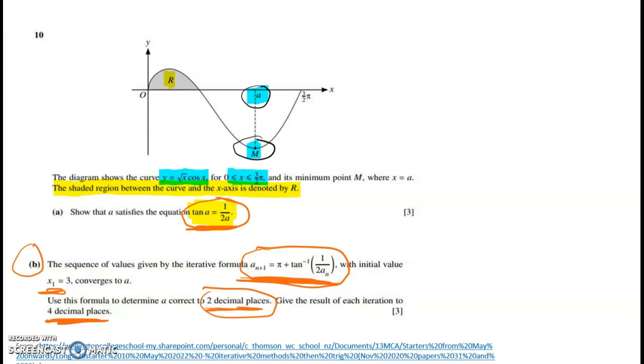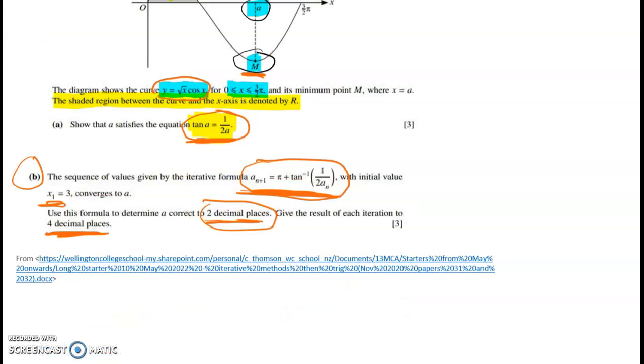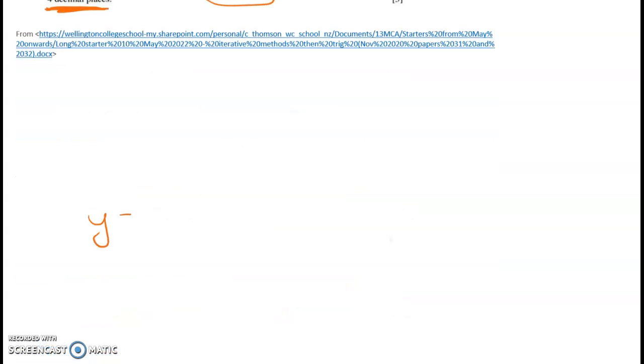So let's start the first bit. We're going to look at my function and we'll start off by differentiating because we know that at a minimum or any stationary point the first derivative must be zero. So y is equal to root x cos x, which we'll rewrite as x to the power of one half times cosine of x. So it's going to be a product rule question.